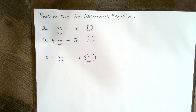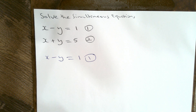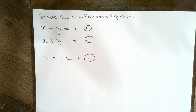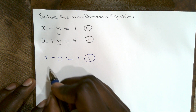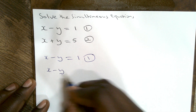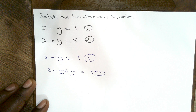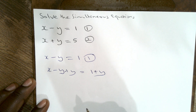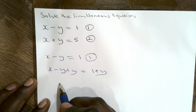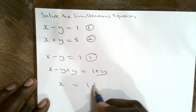If we add y to the left-hand side we're going to end up with x on the left-hand side only. And remember, whatever we do to the left-hand side we have to do to the right-hand side, so we're going to add y to the right-hand side also. So: x minus y plus y equals 1 plus y, which gives us x equals 1 plus y.